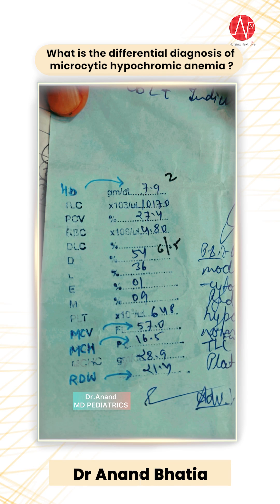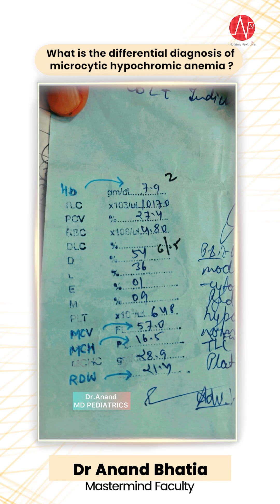Hello everyone, welcome to Pediatrics by Dr. Aran. Today's topic is pediatric hematology. This patient has a hemoglobin of 7.9. Exam entrance question number one: is 7.9 normal?